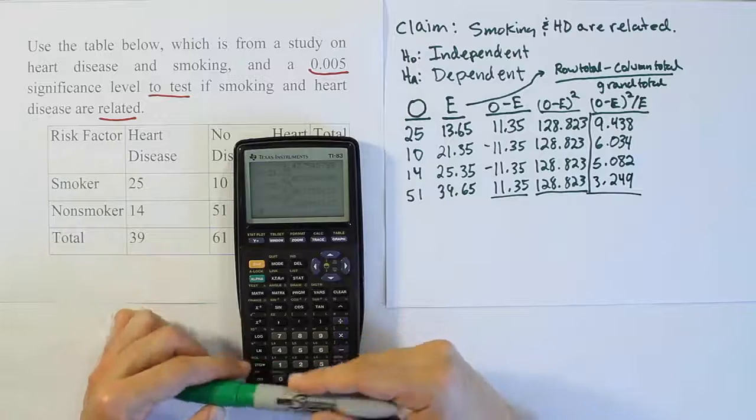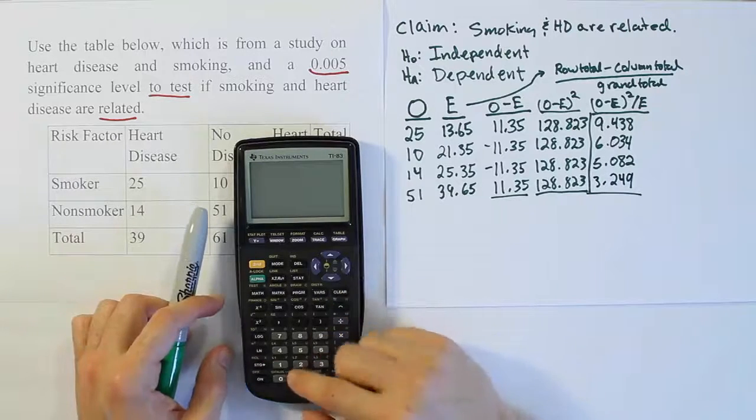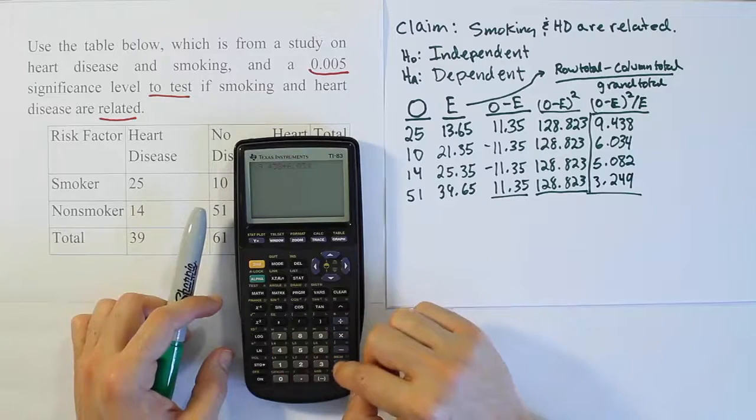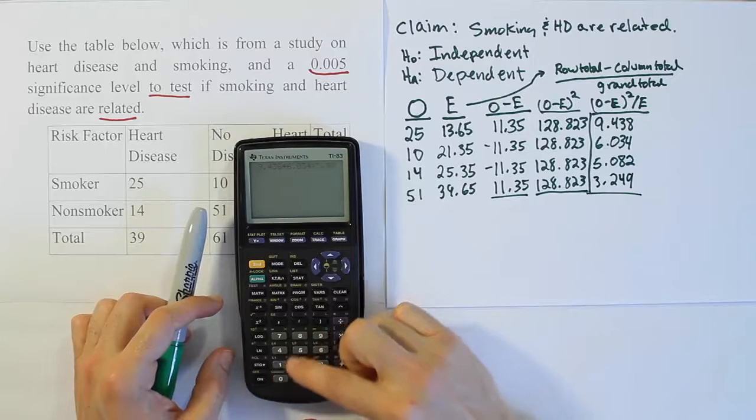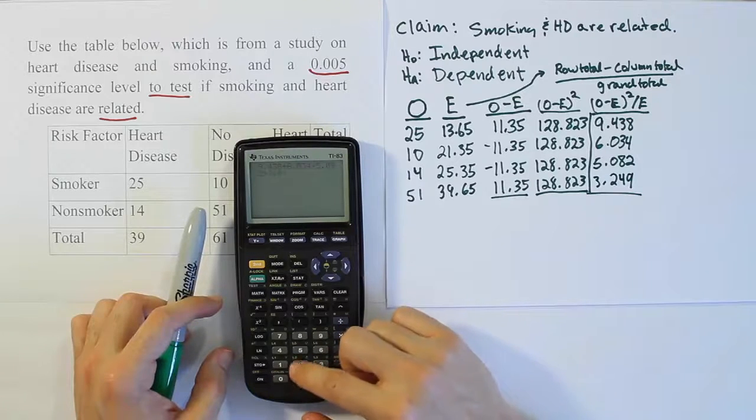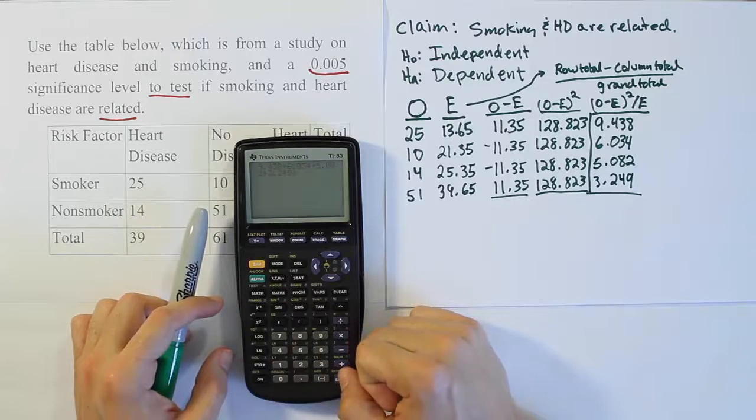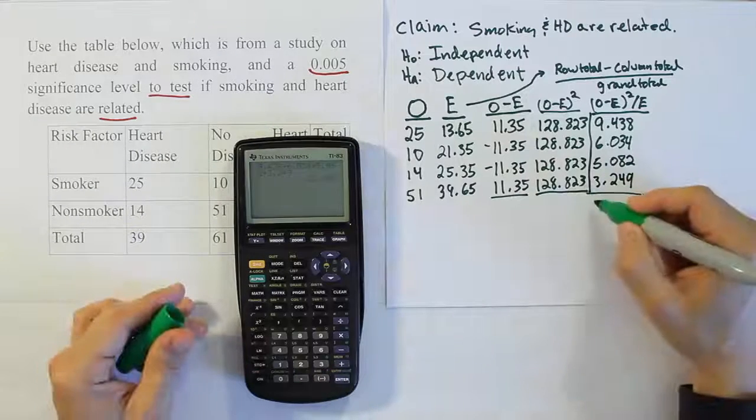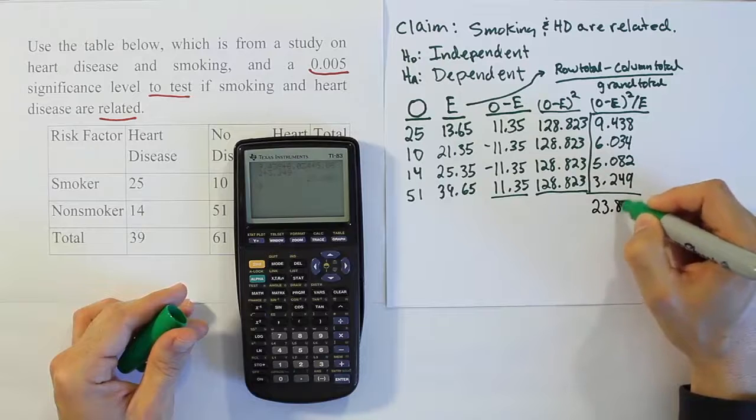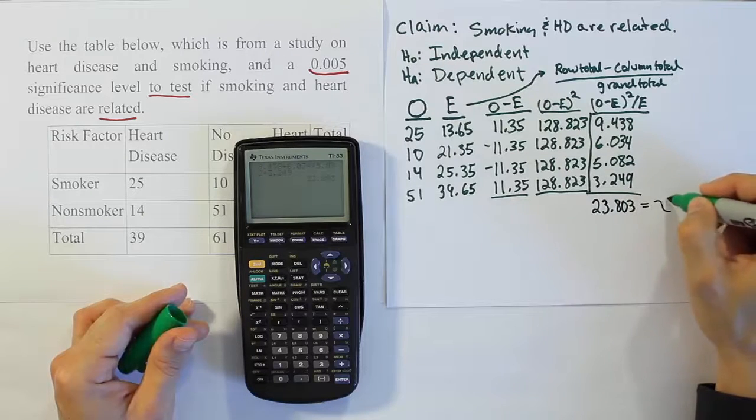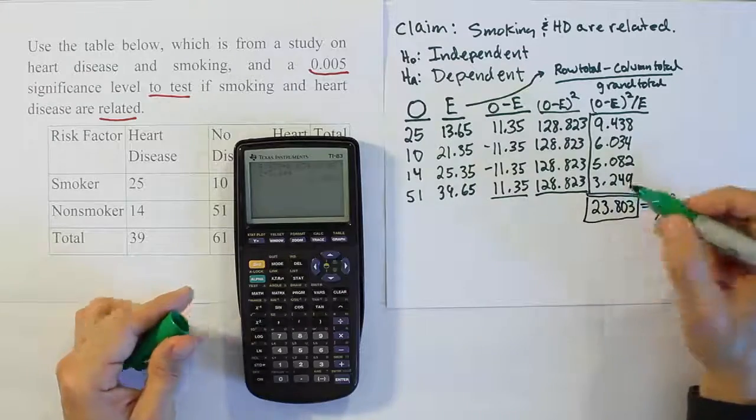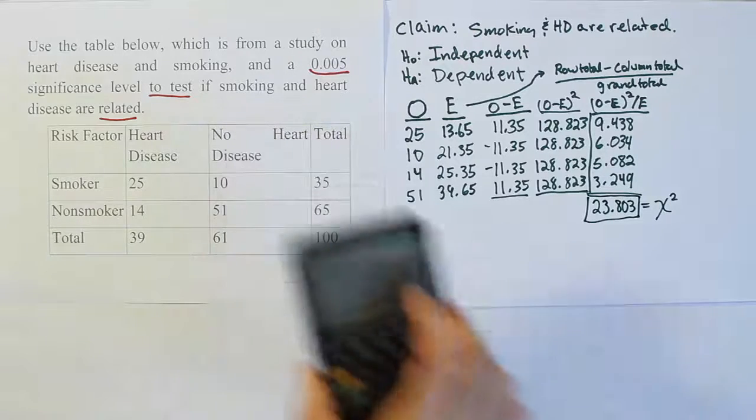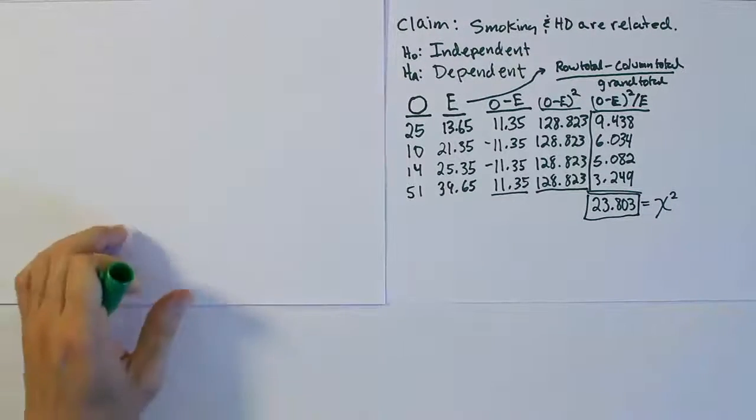Now sum that column and you will have your chi-squared test statistic. So we'll do 9.438 plus 6.034 plus 5.082 plus 3.249. Just double check your numbers, make sure you didn't type anything incorrectly, and hit enter and there's your chi-squared test statistic: 23.803. Since that's our chi-squared test stat, our next step is to get our critical value so we can compare our chi-squared test stat against that critical value. Let's get another sheet of paper out and do that next.